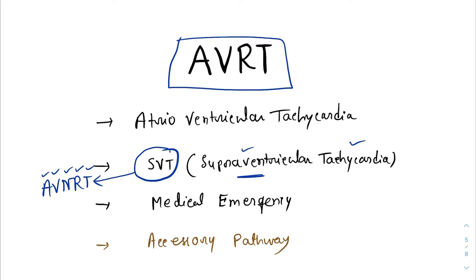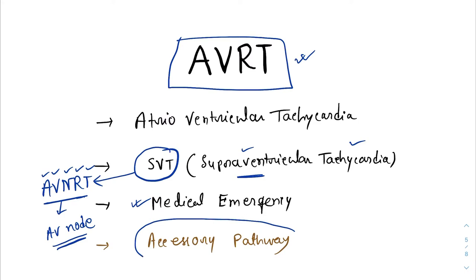AVRT is a medical emergency. We should be able to diagnose a patient from the clinical features and definitely from the ECG, and then only we will be able to treat the patient successfully. Now, what is the difference between AVRT and AVNRT? In AVNRT, the reentrant circuit is within the AV node itself, whereas in AVRT, the reentrant circuit involves an accessory pathway.